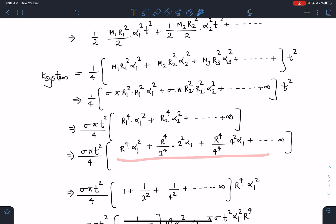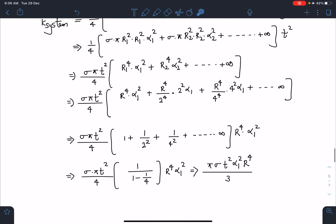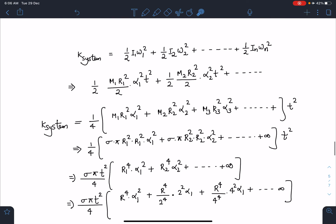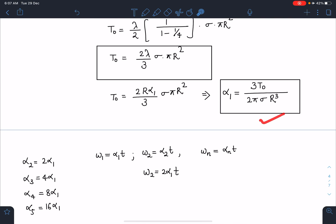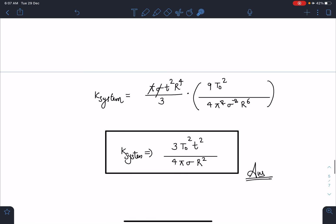After substituting the value of m₁ and simplifying, then converting α₂ in terms of α₁, we get a very nice GP. Total kinetic energy of the system becomes KE = πσt²α₁²R⁴/3. Now substituting the α₁ value derived earlier, I get KE_system = 3T₀²t²/(4πσR²). This is the final answer.